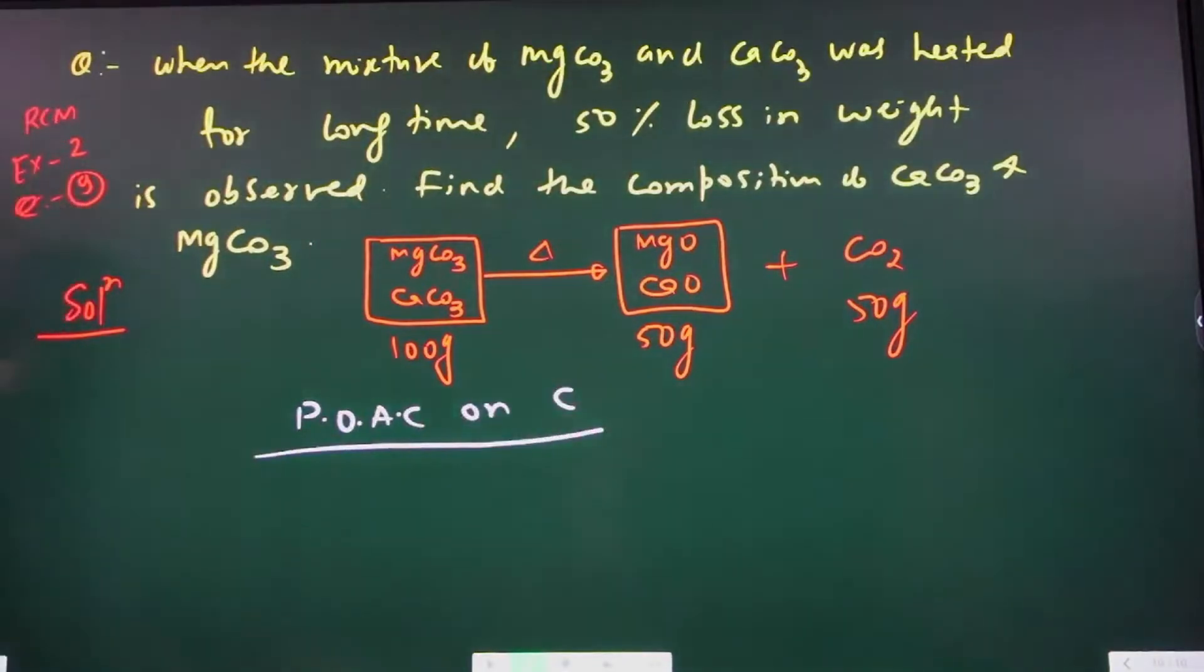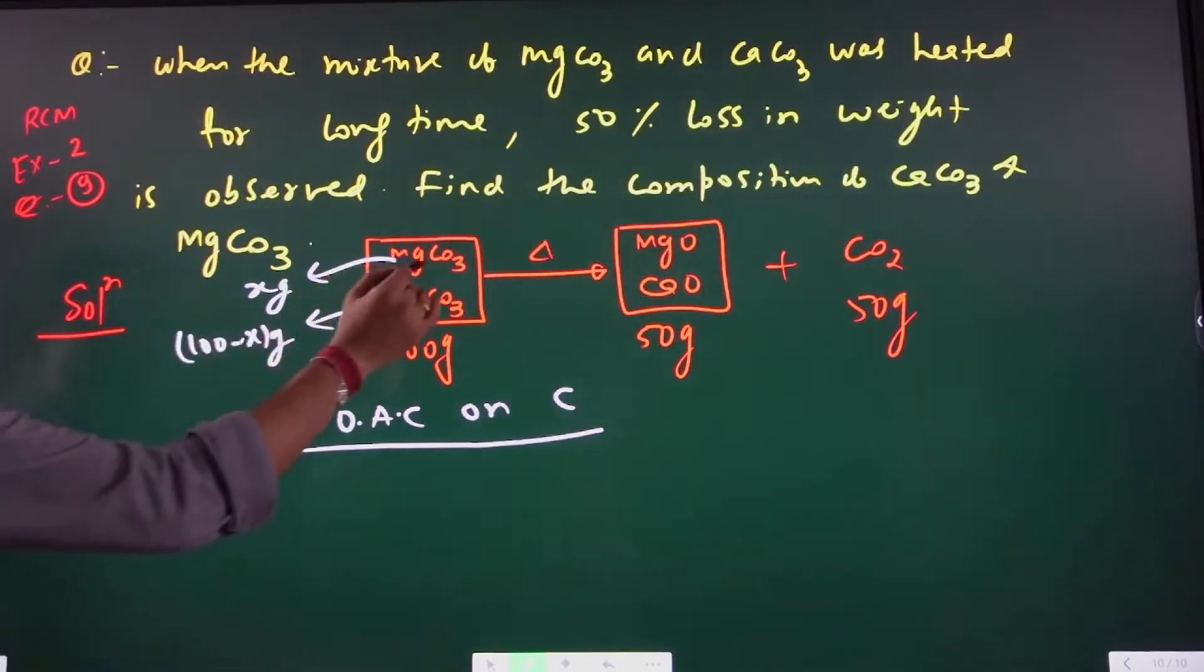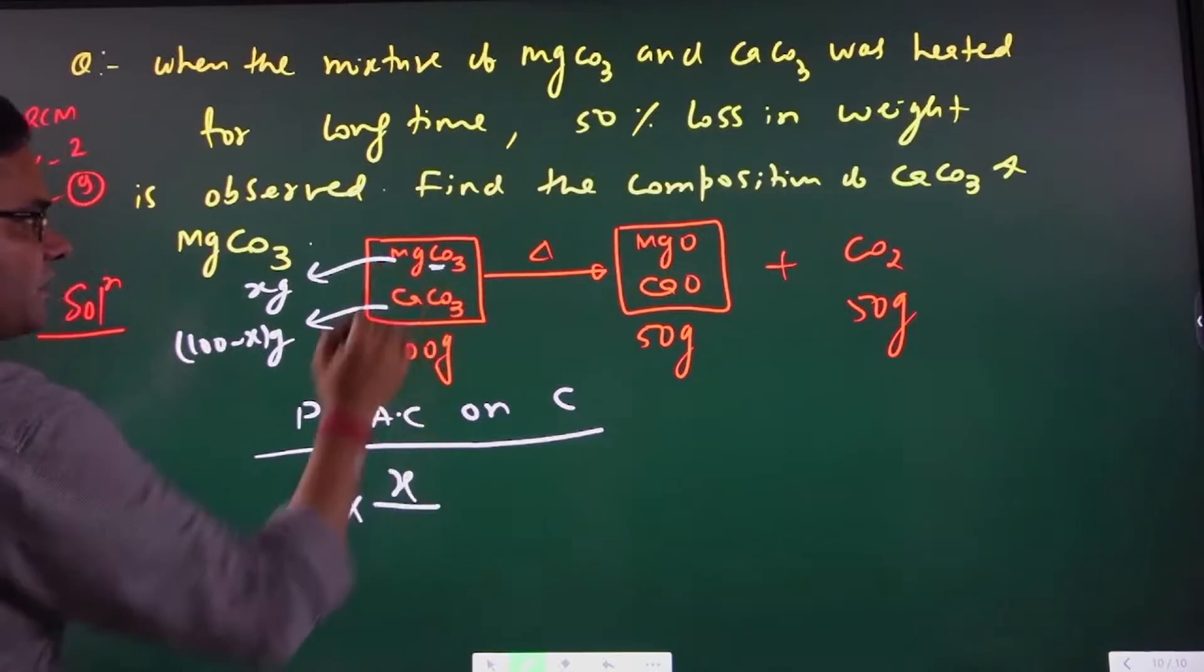Assume this mass is x and this mass is 100 minus x. Carbon has coefficient 1, so it's 1 times x divided by the molecular mass of MgCO3.